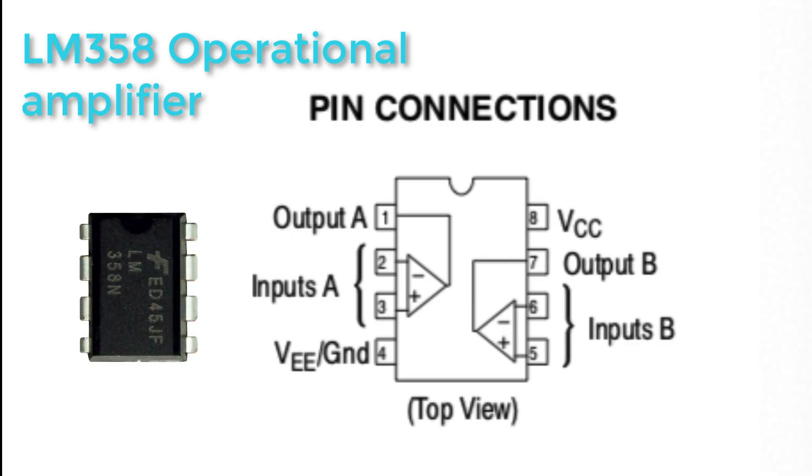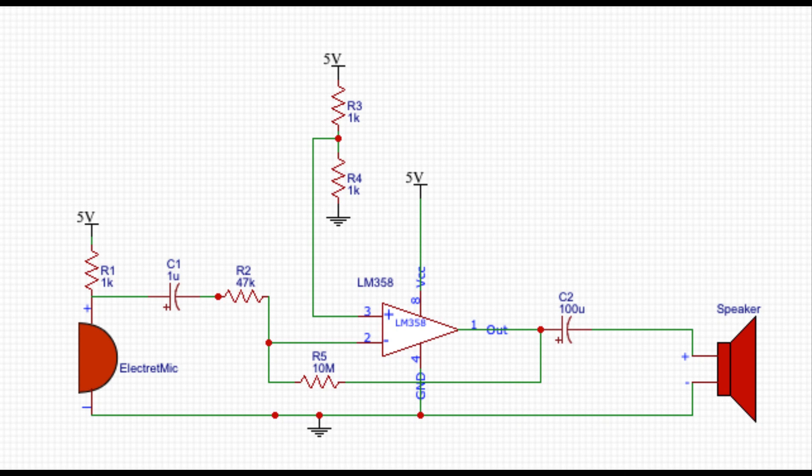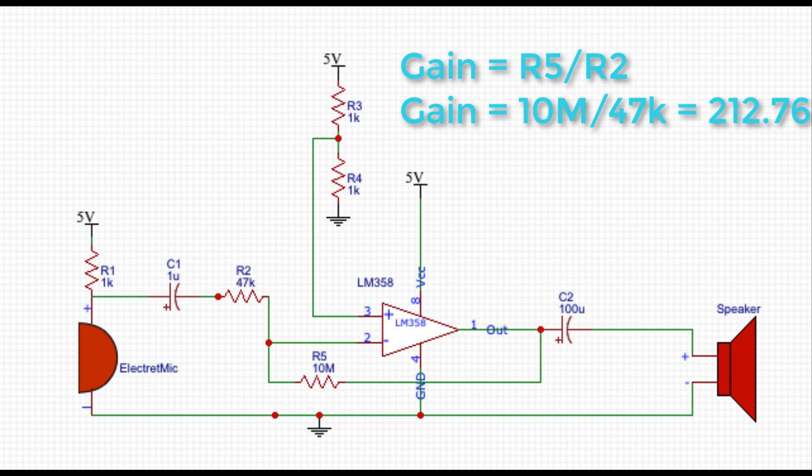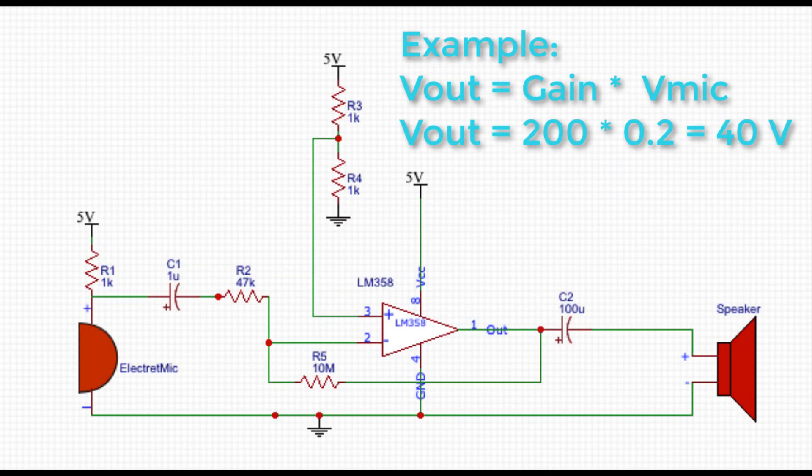So using LM358 chip, which contains two op amps, I designed this simple amplifier to amplify the microphone output. The amplifier gain is determined by the feedback resistance and the resistance connected to the non-inverting pin of the amplifier using this formula. In my case, I am getting a gain of around 200. So for example, if the microphone outputs 0.2 volts, the amplifier output will be 40 volts. But of course, the amplifier has limits.